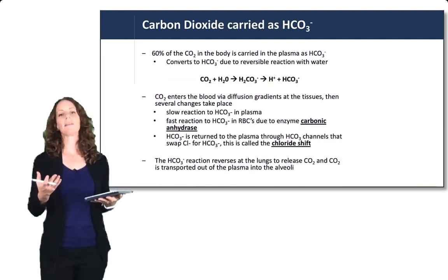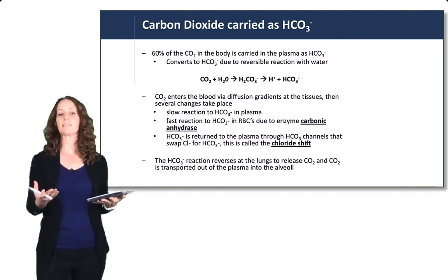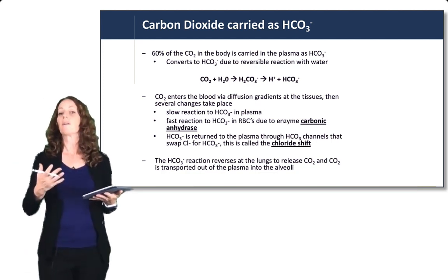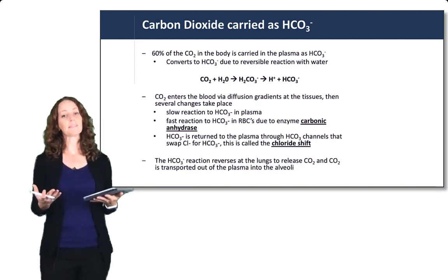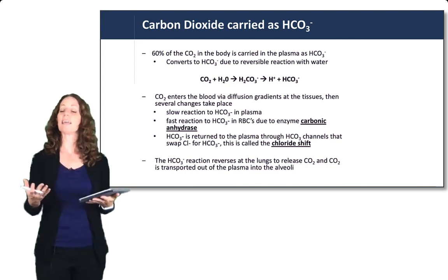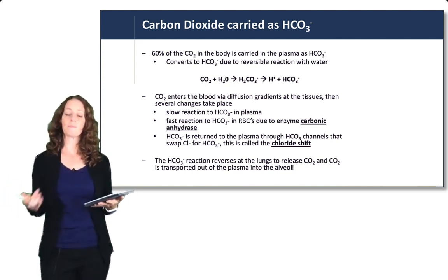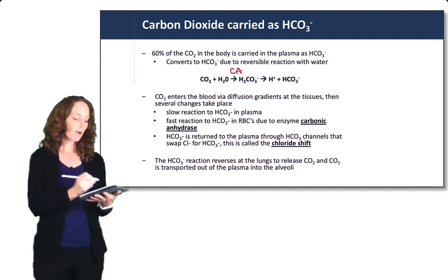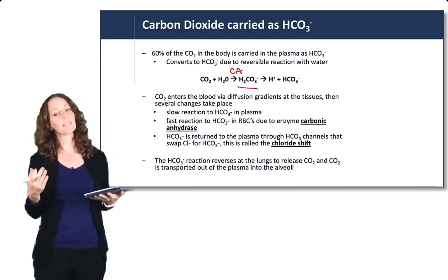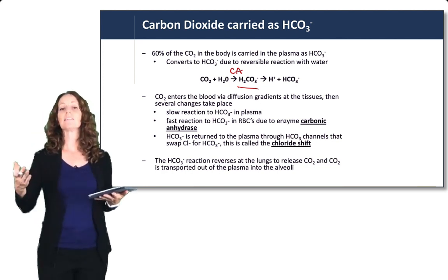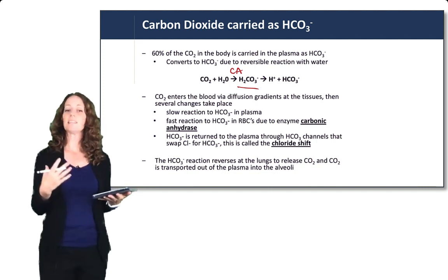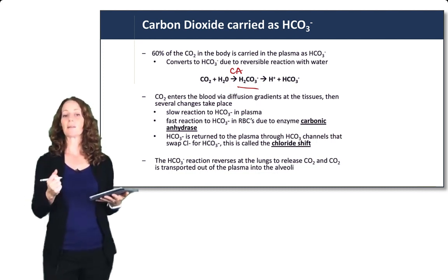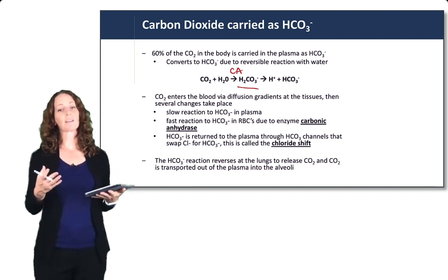This is a summary of how carbon dioxide is carried as bicarbonate. CO2 reacts with water to form a proton and bicarbonate, using the carbonic anhydrase enzyme to move the reaction forward more quickly. Carbonic anhydrase facilitates the formation of carbonic acid, which then dissociates very quickly into a proton and bicarbonate. CO2 enters the blood through diffusion gradients, and in the plasma there will be a slow reaction to bicarbonate.